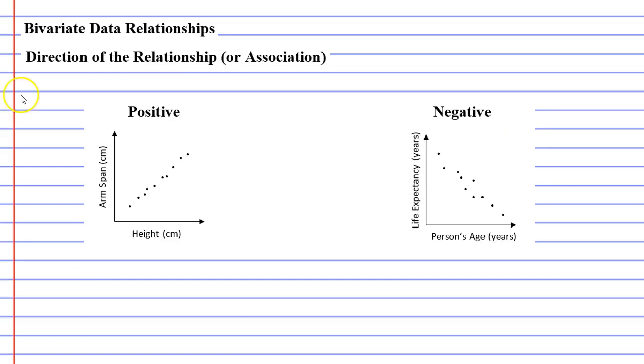Finally, we want to talk about the direction of the relationship or the direction of the association. And when things go up, for instance, as your height goes up, your arm span goes up as well, this is referred to as being a positive relationship, because it's going upwards.